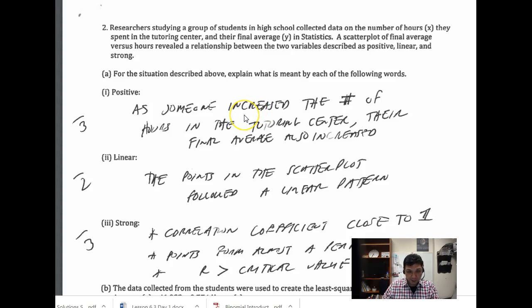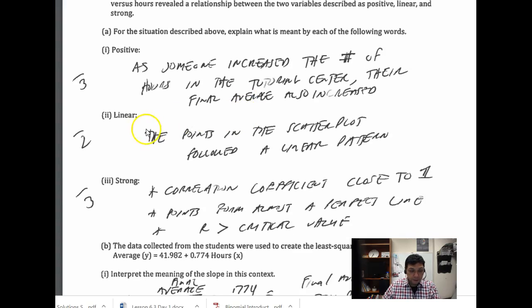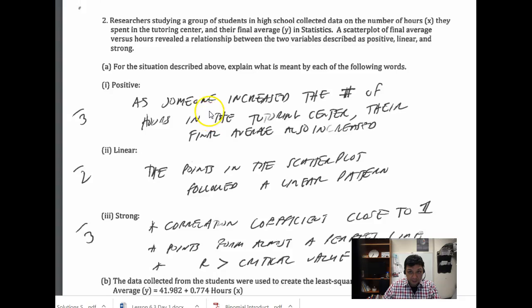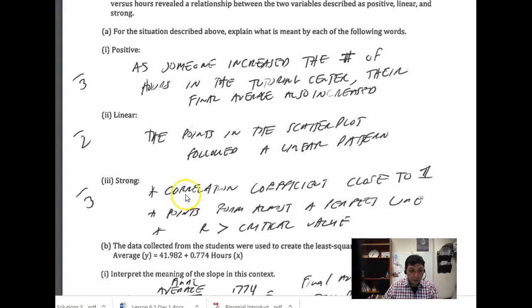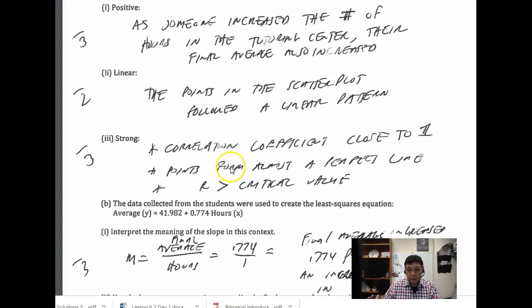Linear means that when you plot the data that you collect, it forms a line or there's a pattern, a linear pattern, and the dots line up. That's what that means. And then strong was related to the correlation and its correlation coefficient, which means it's either close to one or the r-value is greater than critical value - the points form a perfect line. That's what we're talking about with strong correlation.